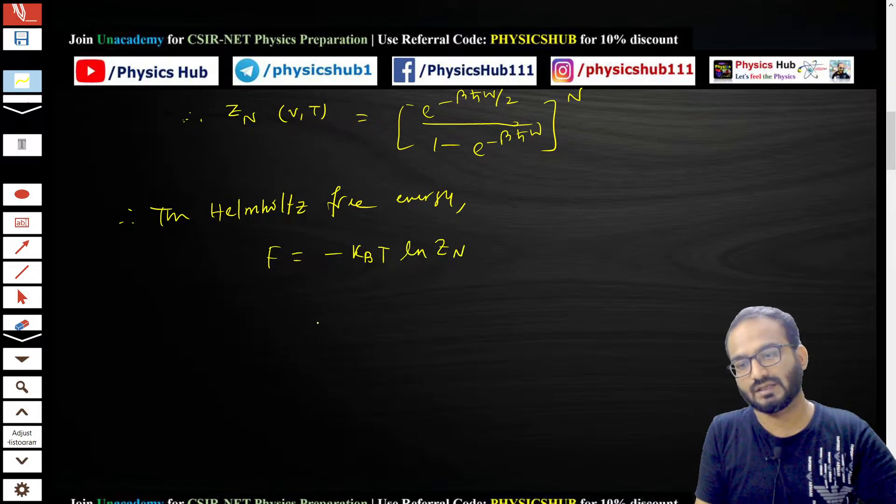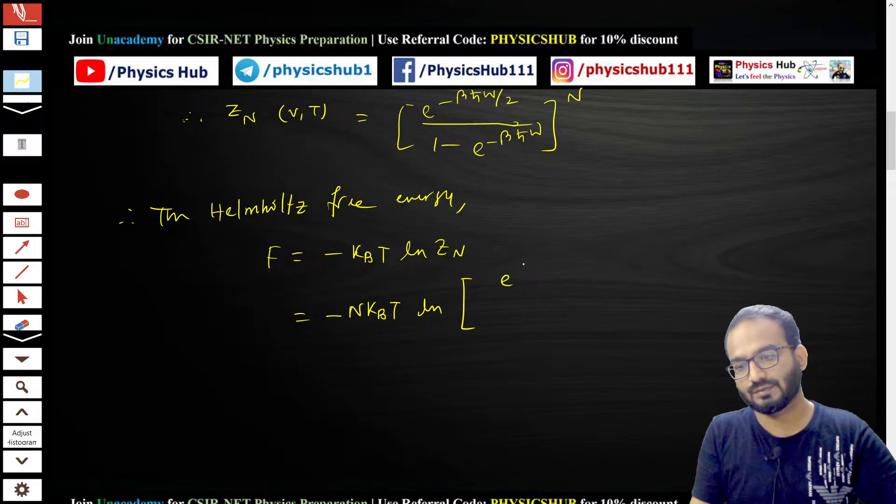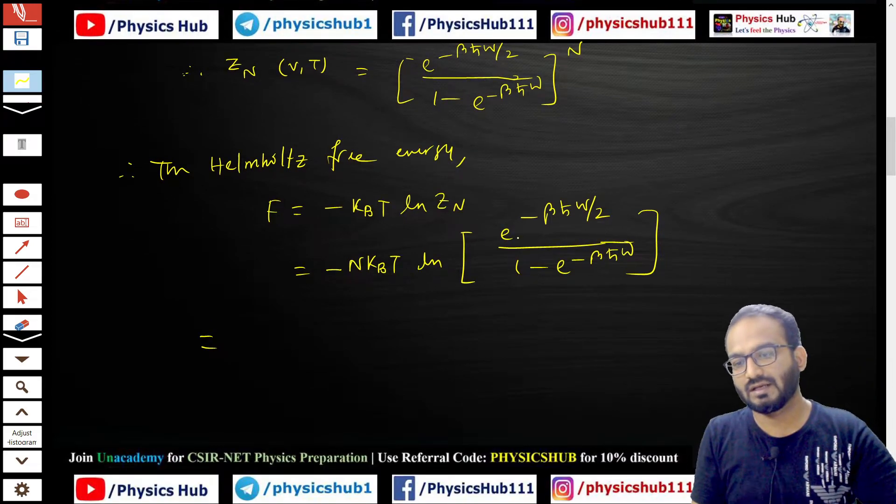This becomes minus Nk_B T ln of [e to the power minus βℏω/2 divided by (1 minus e to the power minus βℏω)]. Using ln(a/b) = ln a minus ln b, we can separate this.